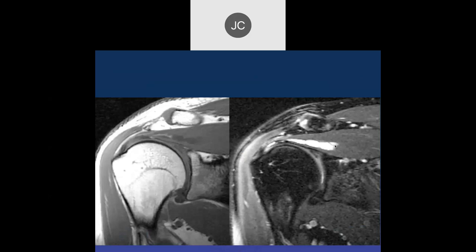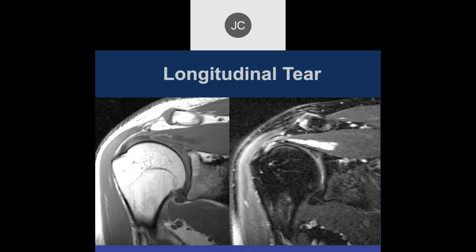Looking at two coronals of the supraspinatus: there's increased articular-side signal on PD fat-sat, and then some cystic fluid tracking posteriorly or medially. I like to call these longitudinal tears — interstitial tears which communicate with the joint-side surface. They tend to fill with fluid like this and can actually become very large, similar to large intramuscular cysts. These should be treated as partial tears.